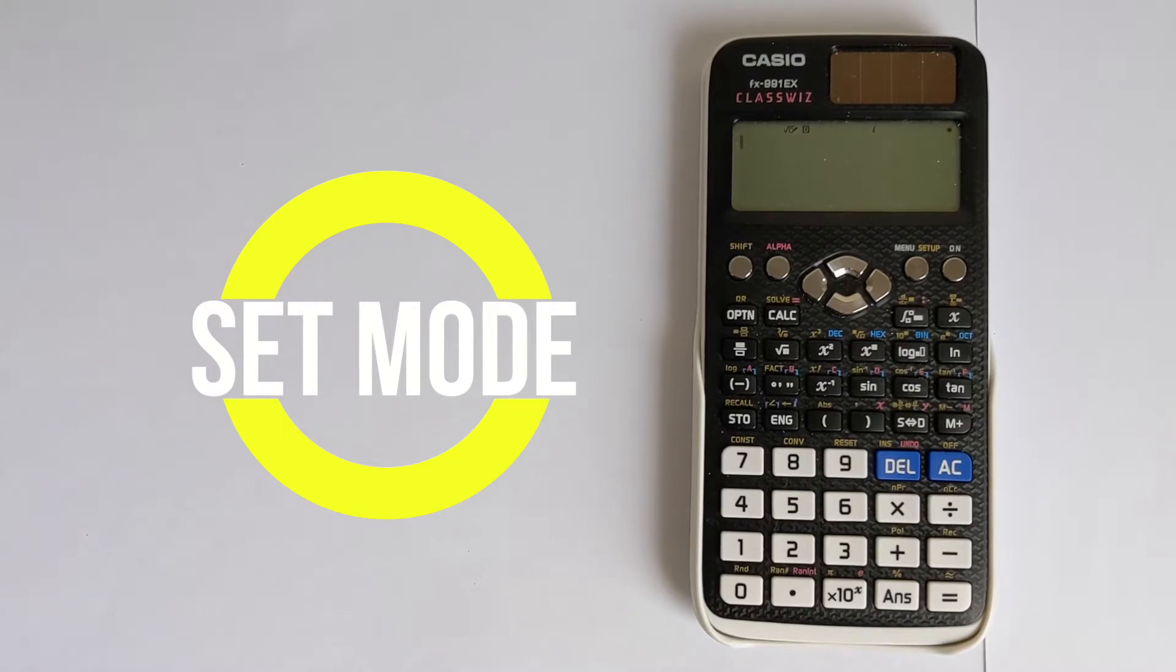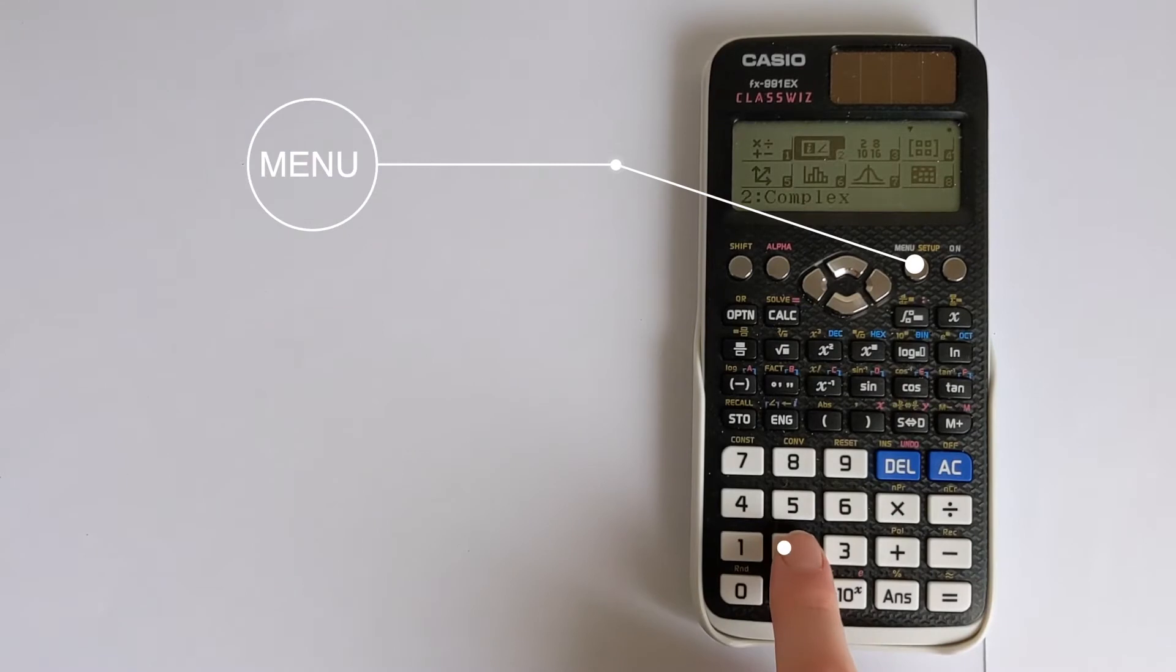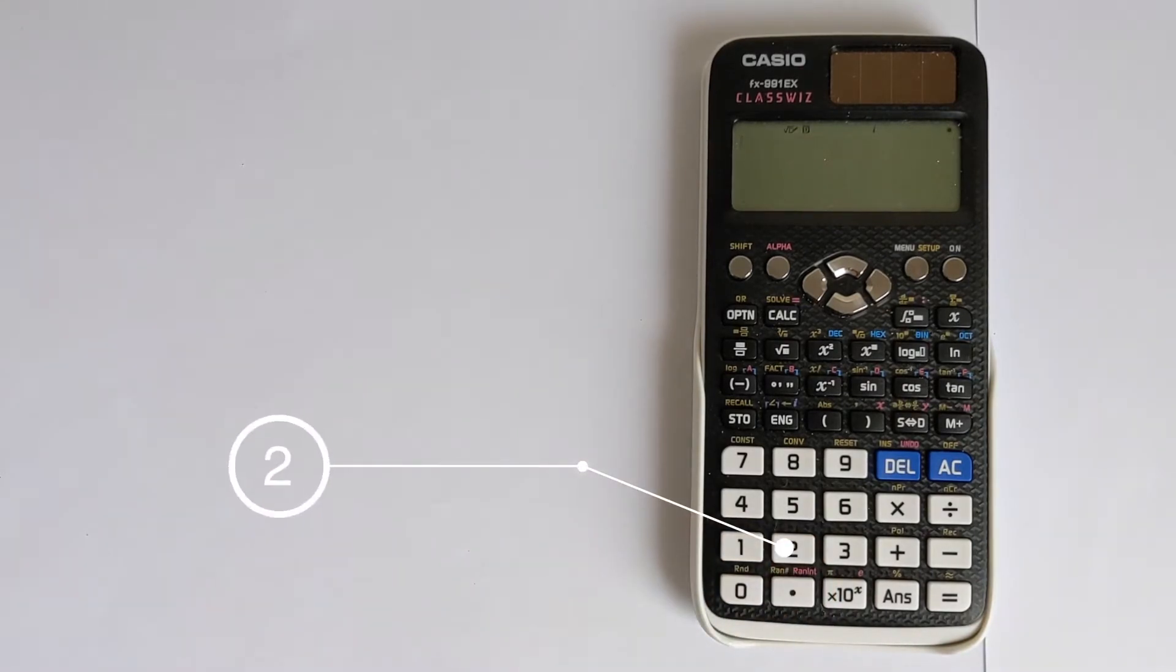We need to change this into the complex numbers mode. Press Menu and then select Option 2, and that will put you into the complex numbers mode and allow you to access the number i.